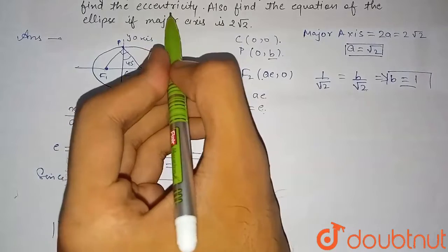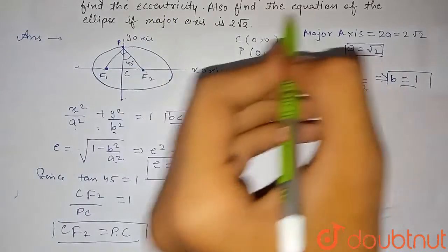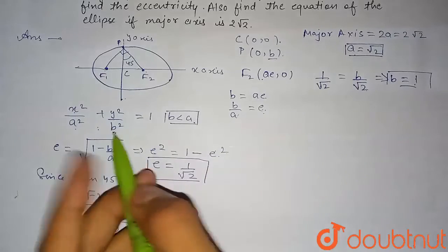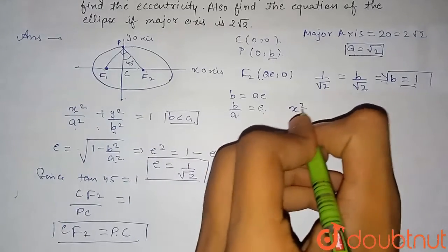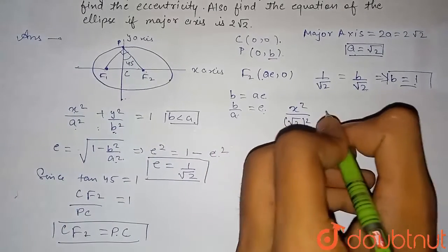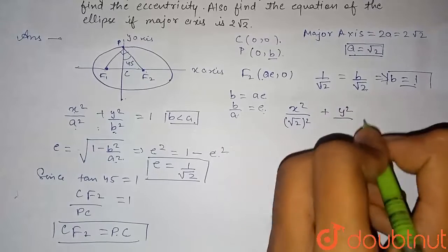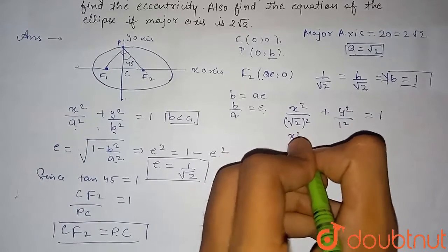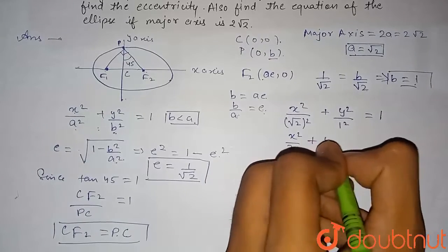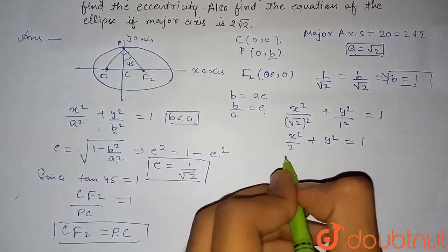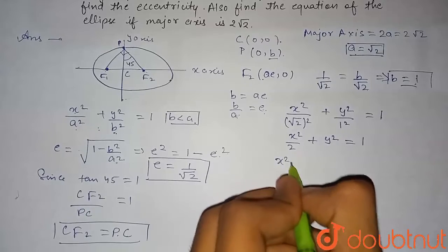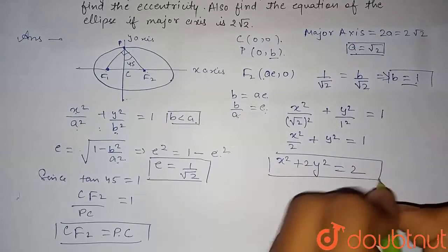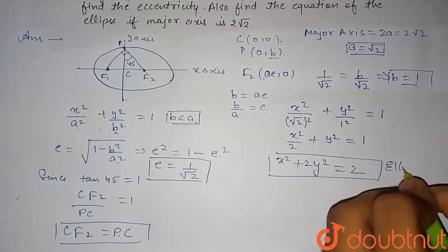We now find the ellipse equation by substituting a = √2 and b = 1. The equation becomes x²/(√2)² + y²/1² = 1, that is x²/2 + y² = 1. Multiplying through by 2, we get x² + 2y² = 2. This is the equation of the required ellipse.